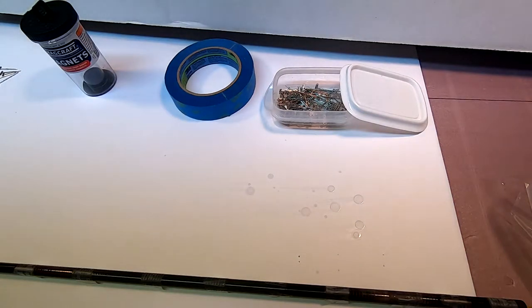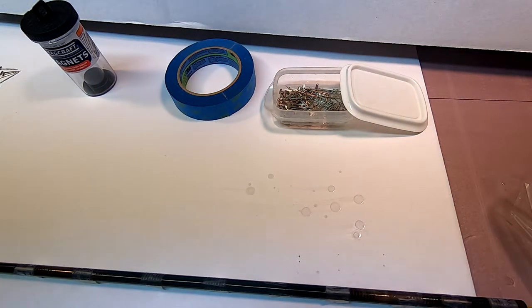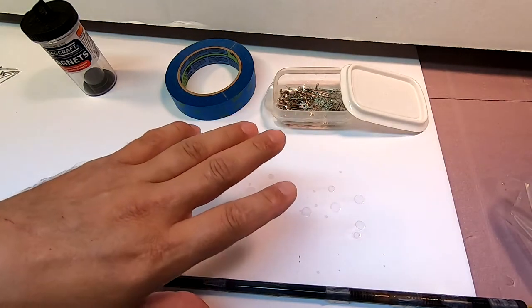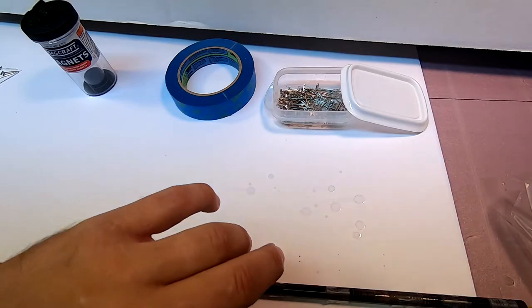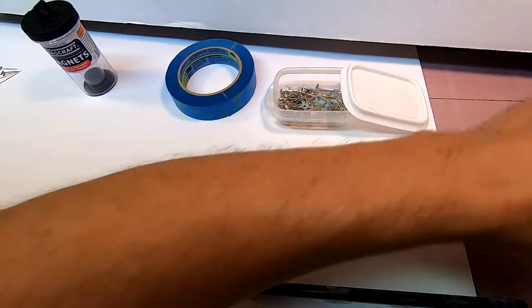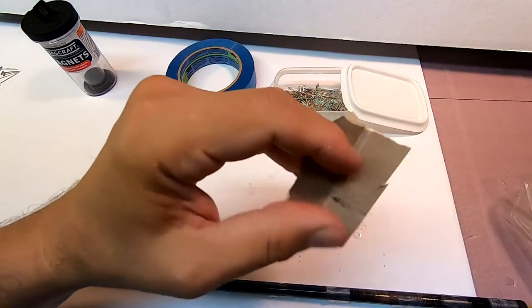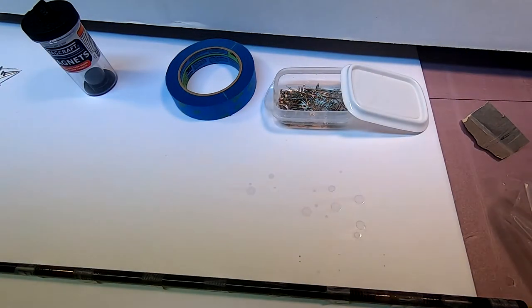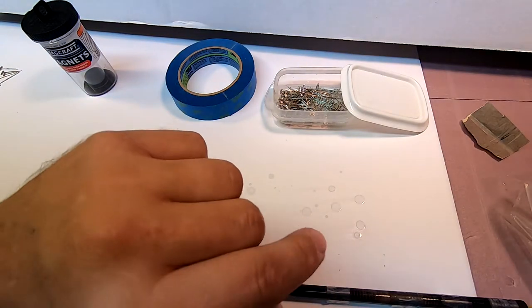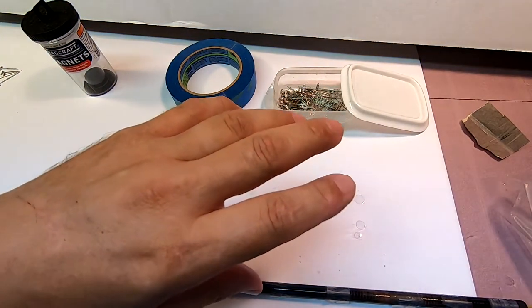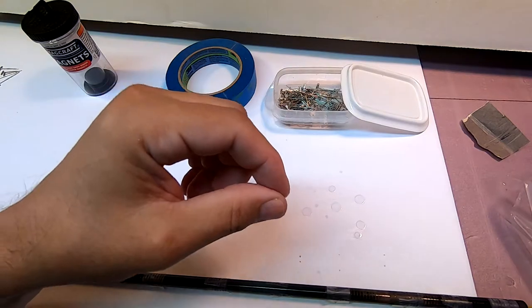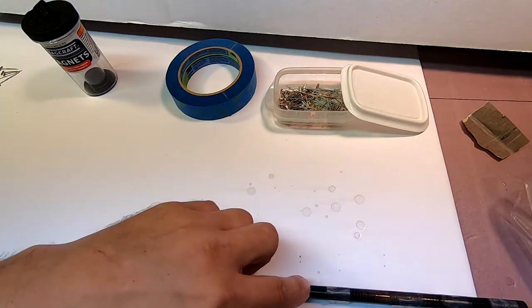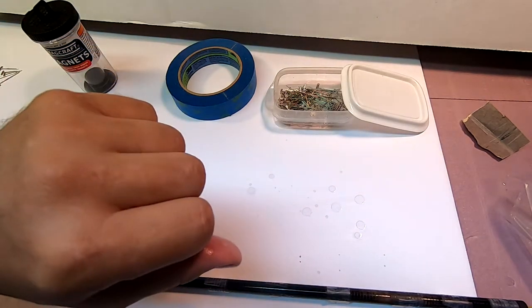I may not have mentioned it so I'm just gonna say it again in case I didn't. I prepped these rods by roughing them up a bit with some 400 grit sandpaper and then I cleaned them off with denatured alcohol to make sure that they would not only adhere to each other when I glued them together but that they would also adhere well to the inside of this carbon fiber tube.